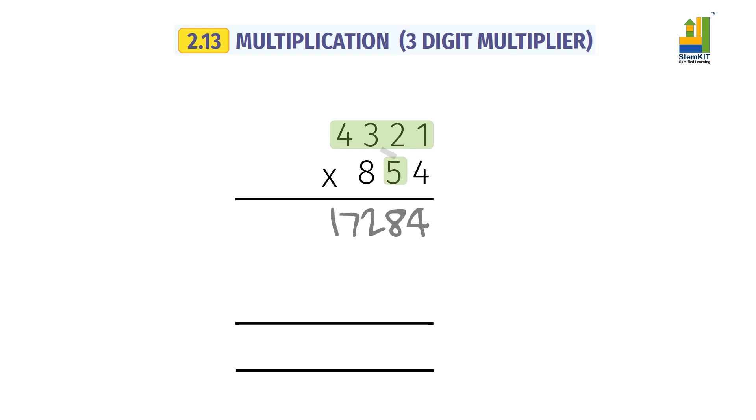Multiplying with tens of multiplier: Insert a 0, 4,321 into 5 equals 21,605.